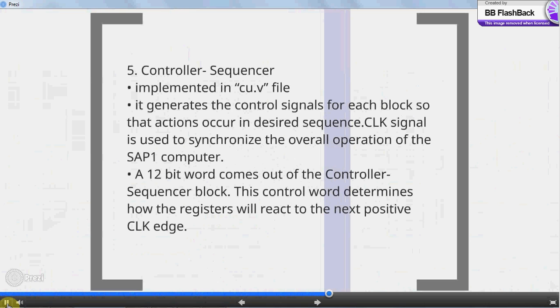5. Controller-Sequencer, implemented in CU.v file. It generates the control signals for each block so that actions occur in desired sequence. CLK signal is used to synchronize the overall operation of the SAP-1 computer. A 12-bit word comes out of the controller-sequencer block. This control word determines how the registers will react to the next positive CLK edge.